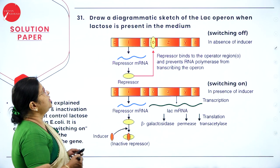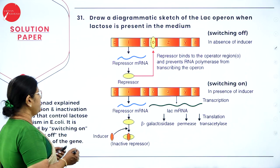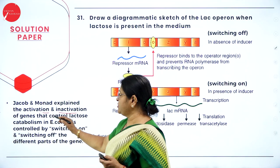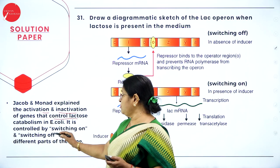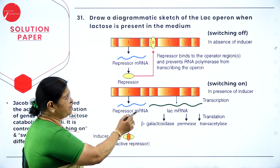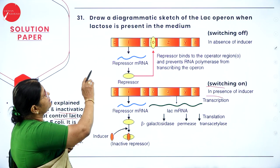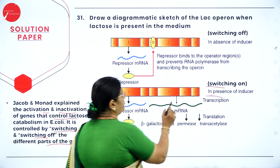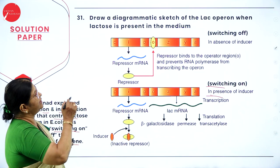Question 31: draw a diagrammatic sketch of the lac operon when lactose is present in the medium. Jacob and Monod explained the activation and inactivation of genes controlling lactose catabolism in E. coli by switching on and off different parts of the gene. In the absence of inducer the system is switched off; in the presence of inducer (lactose) it is switched on. Here you need to explain and draw the lac operon in the presence of the inducer lactose.